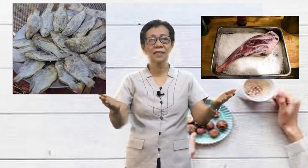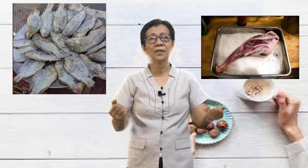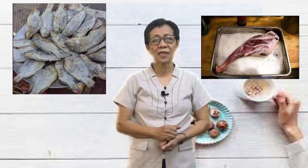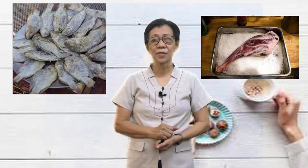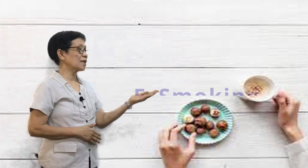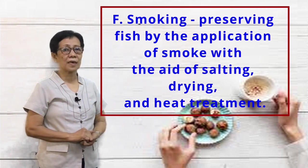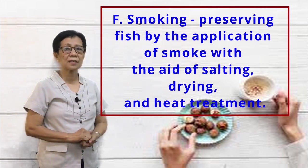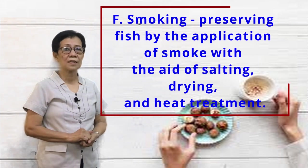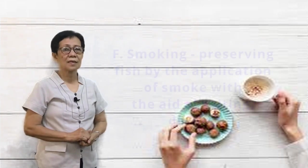Here are examples of food or products produced through salting. Smoking — Letter F — is the preserving of meats by the application of smoke with the aid of salting, drying, and heat treatment.